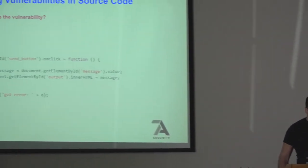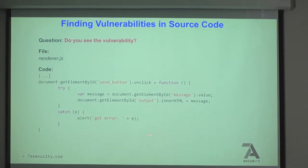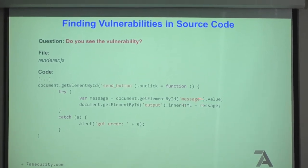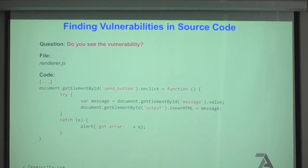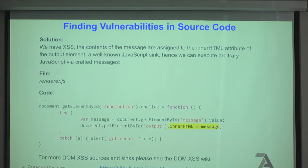Does anybody see a vulnerability? innerHTML - very good. There's a DOM XSS vulnerability here. The application receives a message from the user and assigns it to innerHTML, which is a DOM XSS sink. If you're interested, search for DOMXSS wiki on GitHub - it has many sinks including jQuery sinks. This innerHTML assignment is what causes the DOM XSS vulnerability.